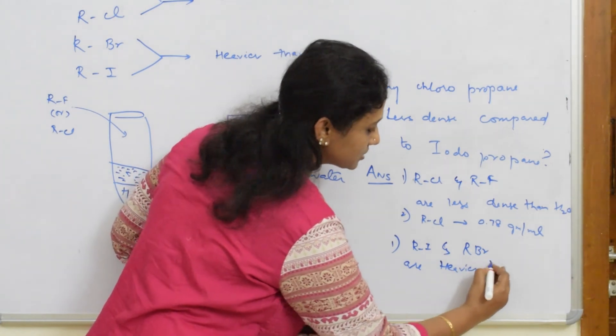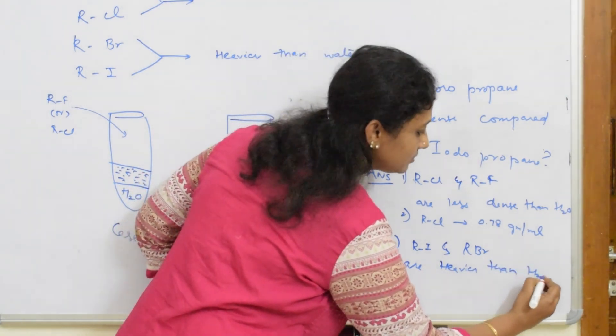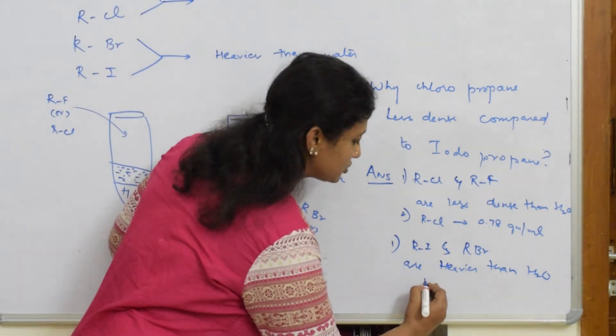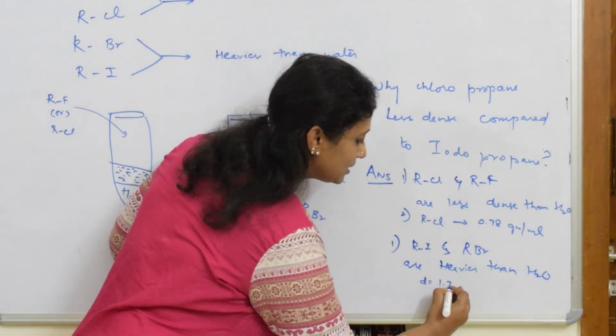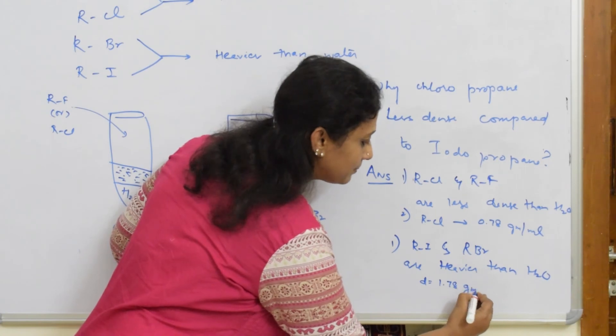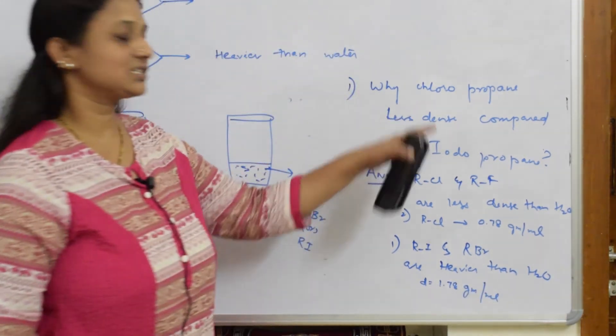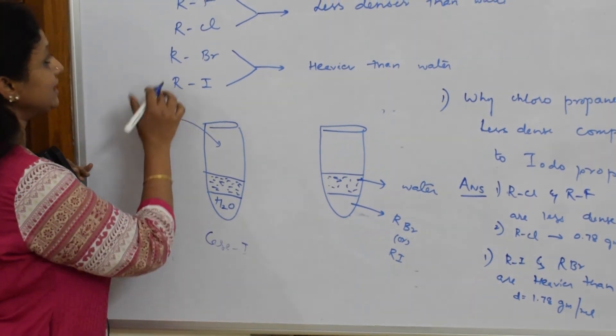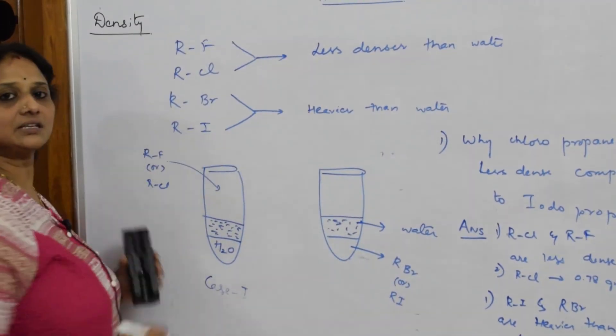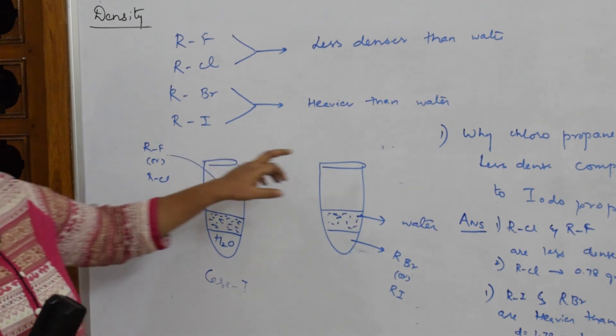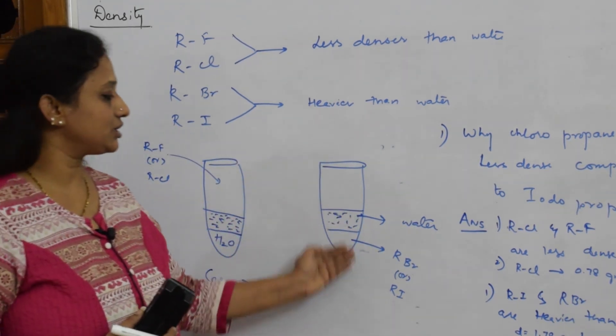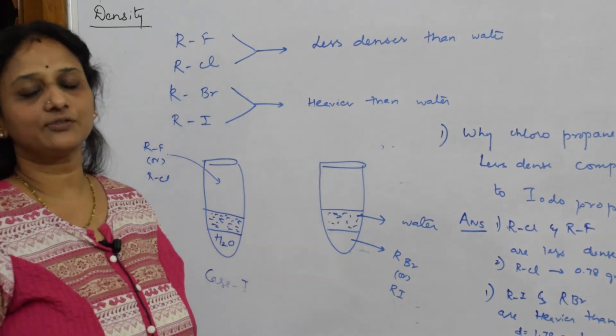That is how we are going to answer. Just remember: the first two haloalkanes are less dense than water, the second two haloalkanes are heavier than water. That is the reason you see this clear demarcation in the layers. Thank you for watching.